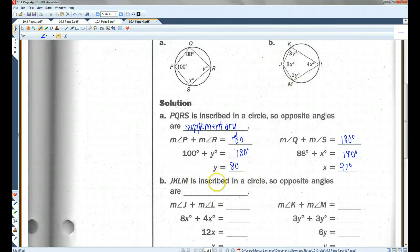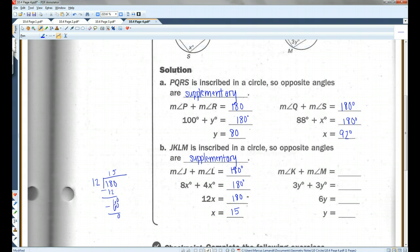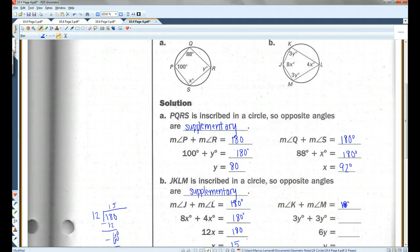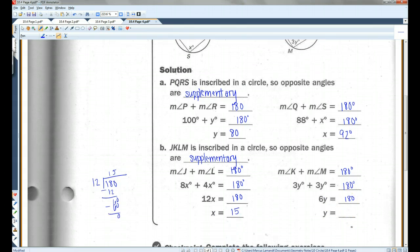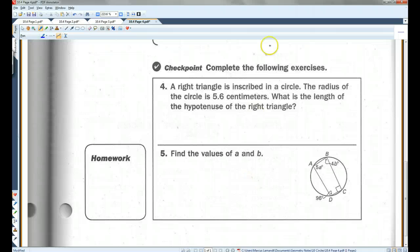Same thing over here. These angles are also supplementary, the ones that are opposite. Angle J and L add up to 180 degrees. 8X plus 4X equals 180. So, 12X equals 180. If I divide both sides by 12, you should get 15. Angle K and angle M also add up to 180. 3Y plus 3Y equals 180. I'm going to divide both sides by 6. Y equals 30. And you guys can do the checkpoint. That's all.